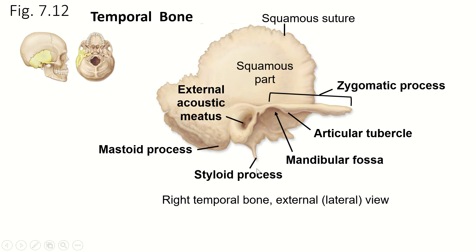We have two more processes. The styloid process is pointy like a stylus — well, it's styloid. Remember, oid means kind of. So it's a styloid process, and that sticks down here. And then the mastoid process is this big bumpy thing. You actually have a very large muscle that attaches there called the sternocleidomastoid — we'll talk about that more when we get to the muscles. If you go from your ear lobe back, you will feel a big bump right behind your ear. That is your mastoid process.